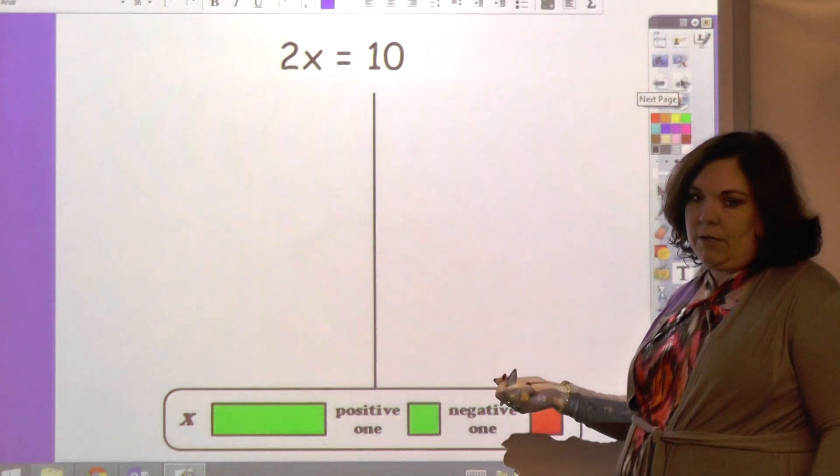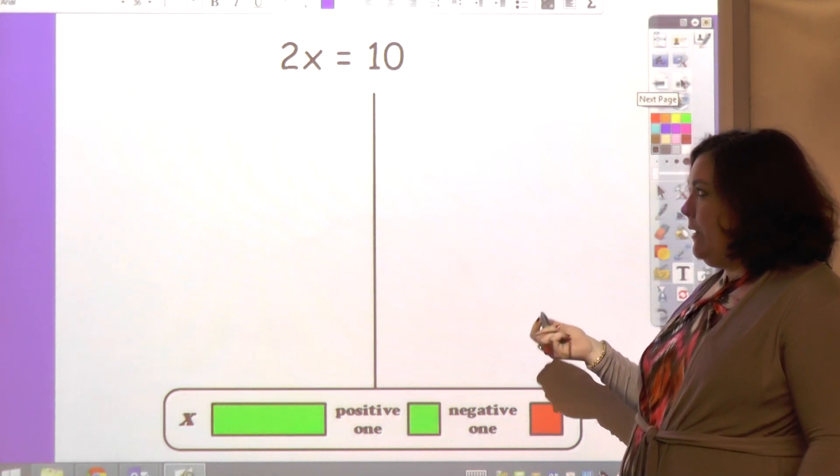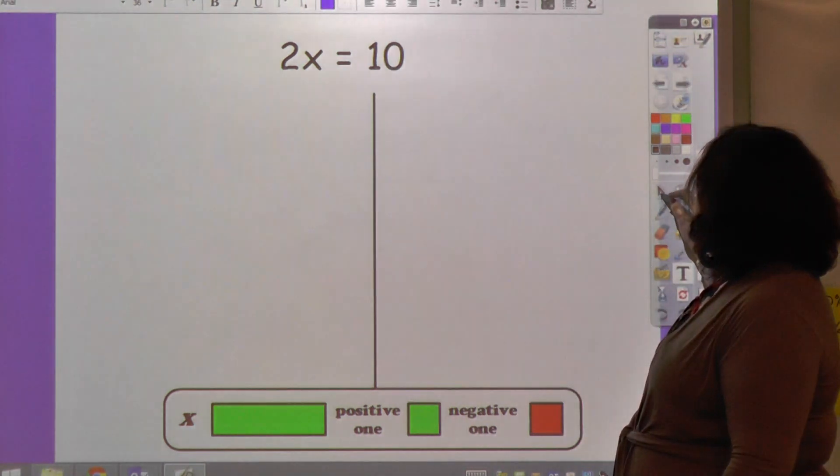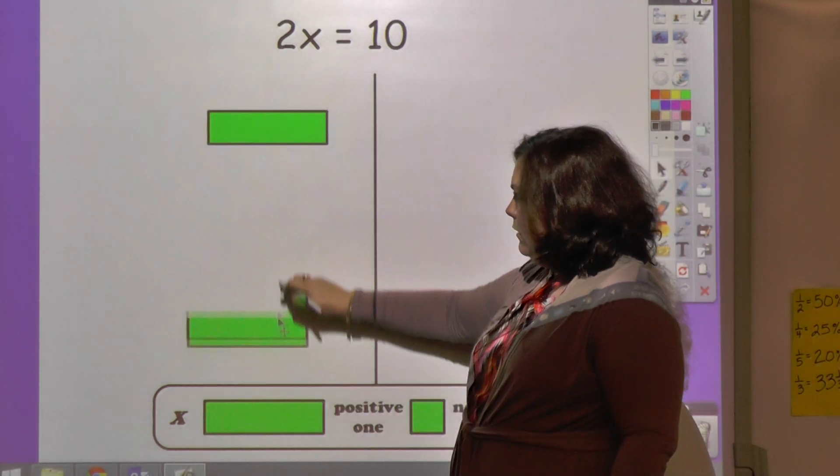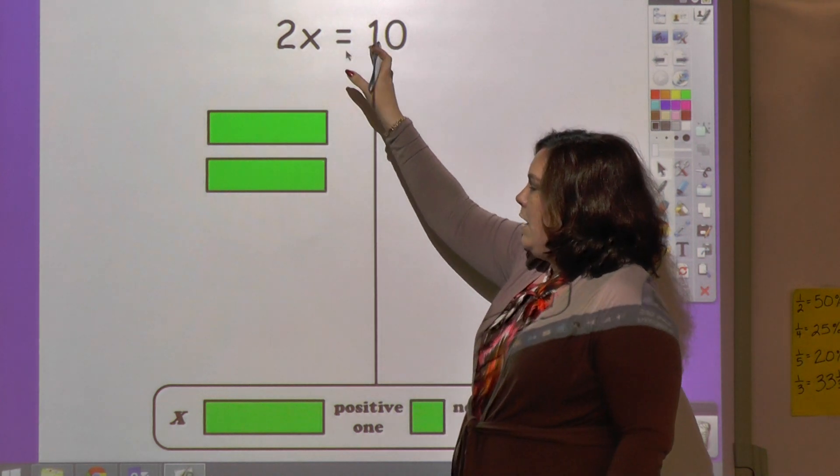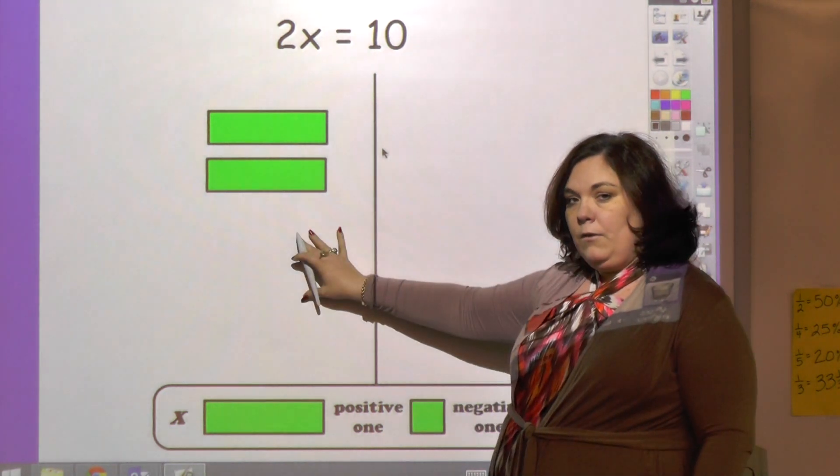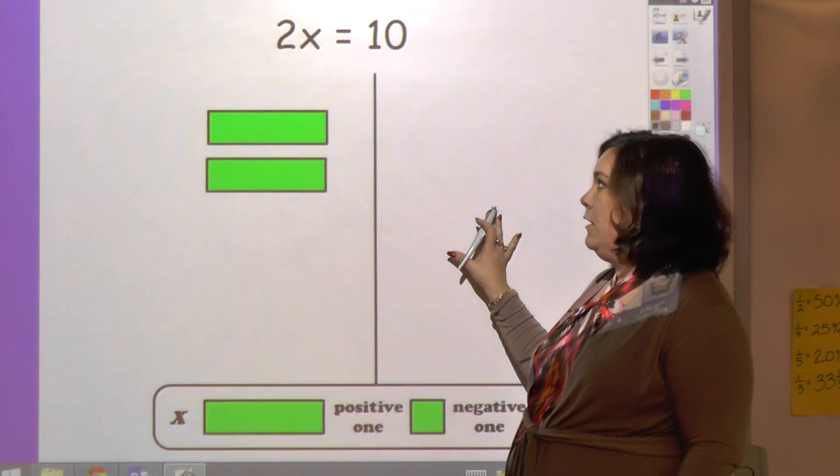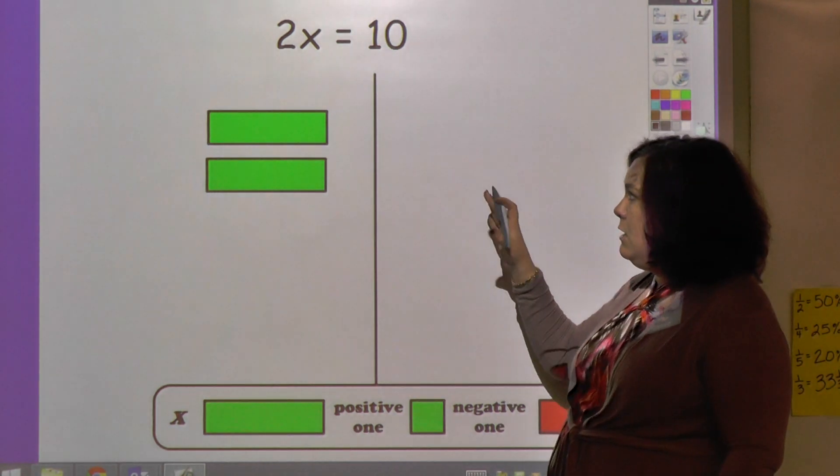All of these problems today are going to have multiplication or division with a variable, and we're going to model them to show you how this is modeled. 2x is just two bars, and that's on this side. Then the equal sign is represented by this line that's saying whatever's over here is equal to over here.